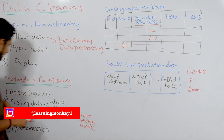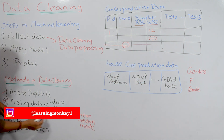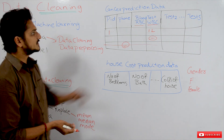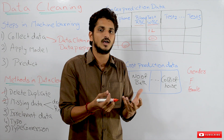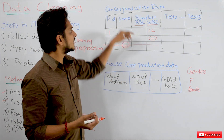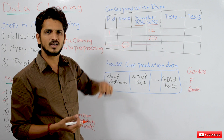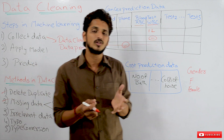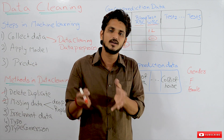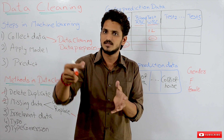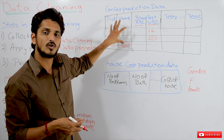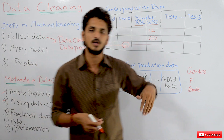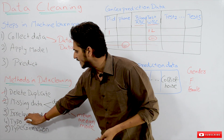Coming to our next data cleaning method: unrelated data, also called irrelevant data. Take this example — we are predicting whether a person has cancer or not. In this data set, is the phone number important? No. We predict based on the test values, not the phone number. This is unrelated data. For this type of column, we can simply drop the column.